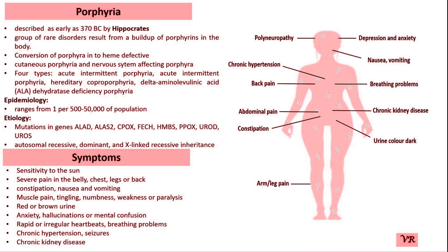Several specific types of porphyria are reported, such as acute intermittent porphyria (AIP), porphyria cutanea tarda (PCT), hereditary coproporphyria (HCP), variegate porphyria (VP), and erythropoietic protoporphyria (EPP).